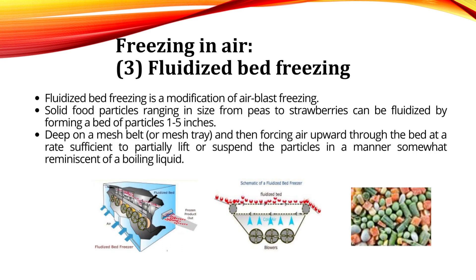Fluidized bed freezers are used to freeze particulate foods such as peas, cut corn, diced carrots, and strawberries. The foods are placed on a mesh conveyor belt and moved through a freezing zone in which cold air is directed upward through the mesh belt, partially lifting the particles so they appear to move like boiling liquid. This results in excellent heat transfer between the air and the product.